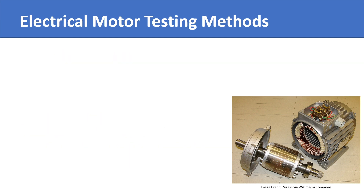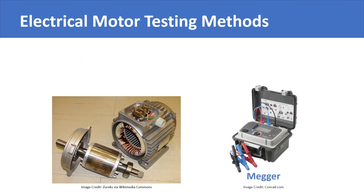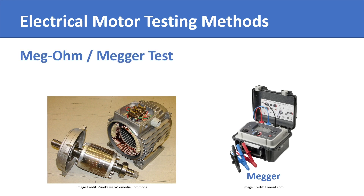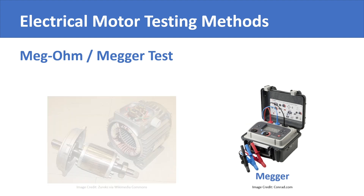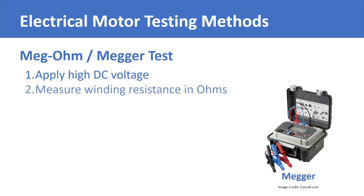Another similar test is the Megohm test. It is performed by a Megohm meter, simply referred to as a Megger, that tests the health of the winding insulation. It does so by subjecting the motor to a very high DC voltage and measuring the resistance of the winding in ohms. In case the winding insulation health is compromised, a low ohm reading will be observed.